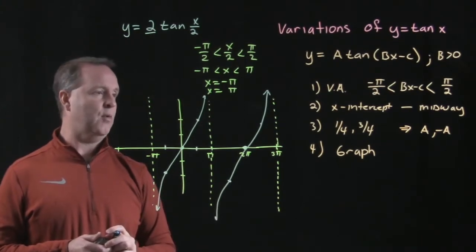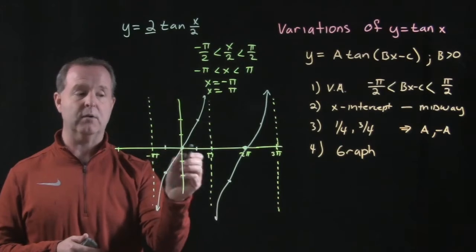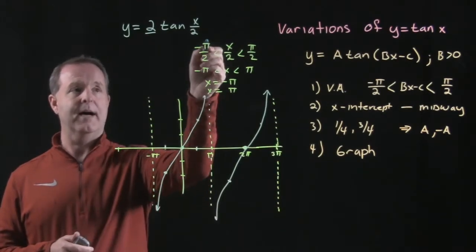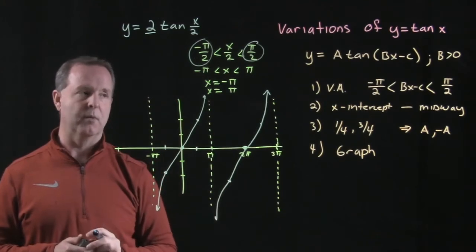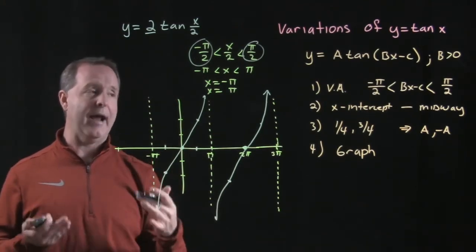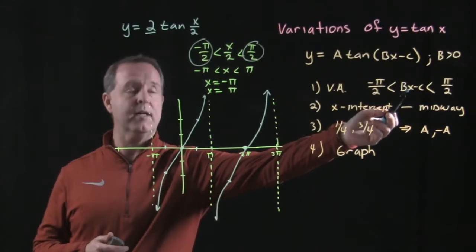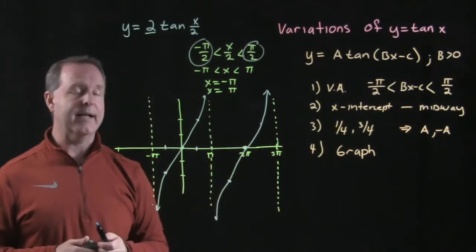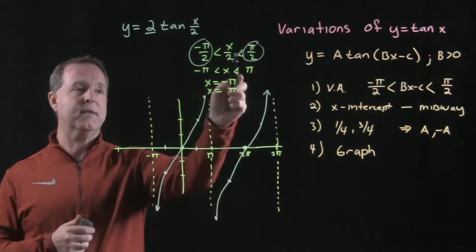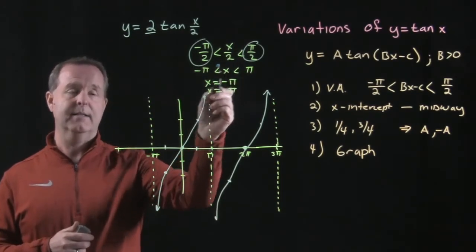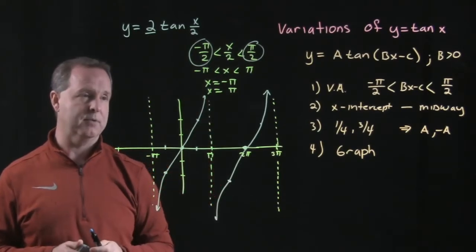The key point to remember is that when we're trying to determine the vertical asymptotes, they are not simply at negative pi-halves and pi-halves. Rather, I discover where they're at by taking the argument and setting up a compound inequality over that range. Once I use that and solve for x on both sides, those become my vertical asymptotes.